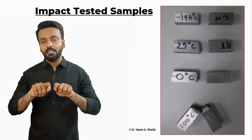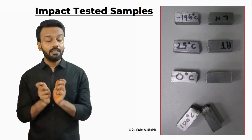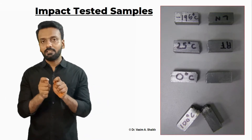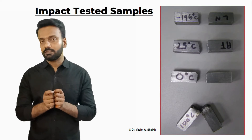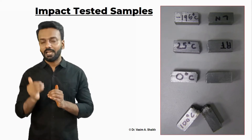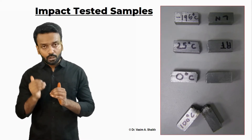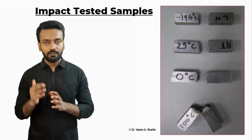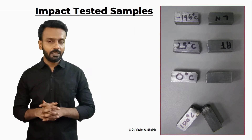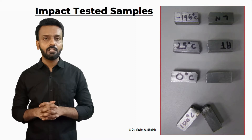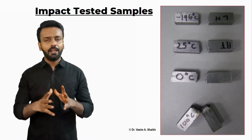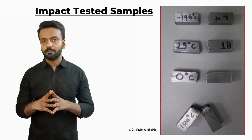did not break into two pieces, so it is more ductile. As we go on lowering the temperature from 25 degrees Celsius to zero and then minus 196 degrees Celsius — that is liquid nitrogen temperature — the material becomes more and more brittle.